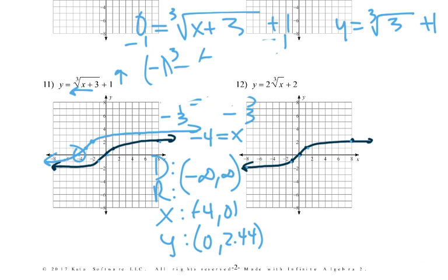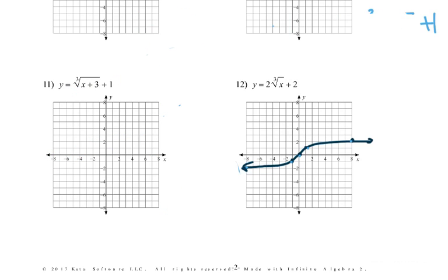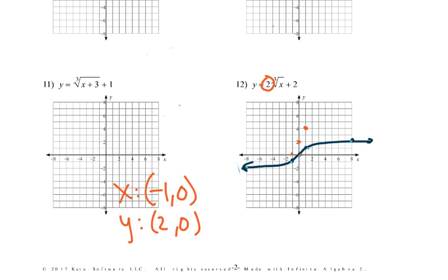For number 12, same idea but we move up 2 and double it. Starting at (0,0) shifted up 2, then doubled — so instead of right 1 up 1, we go right 1 up 2; to the left 1, down 2. The x-intercept is at (−1, 0) and the y-intercept is (0, 2). Domain and range are both negative infinity to infinity. When we extend to the point that was at 8 on the parent, we go up 2 then double it — instead of up 2 we go up 4, giving us that stretched curve.